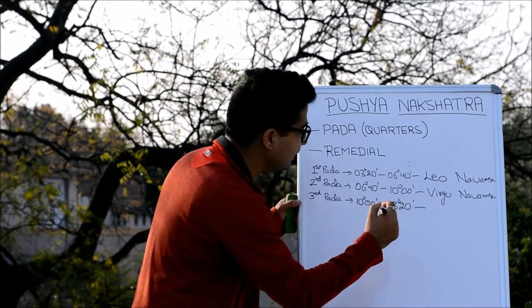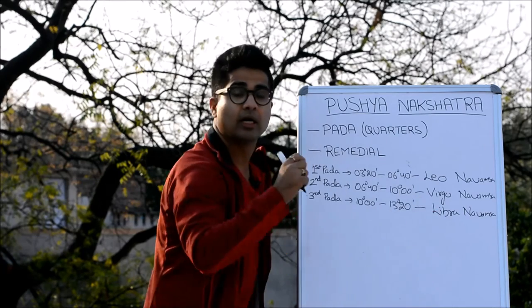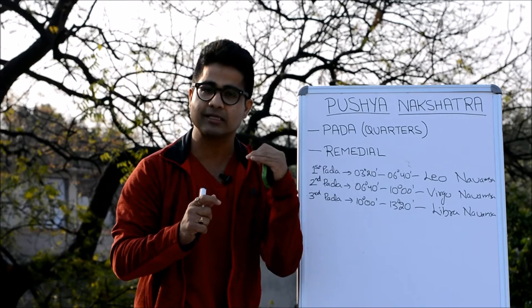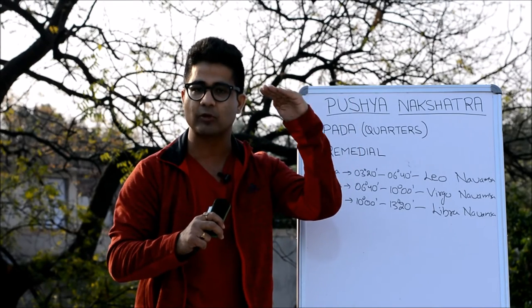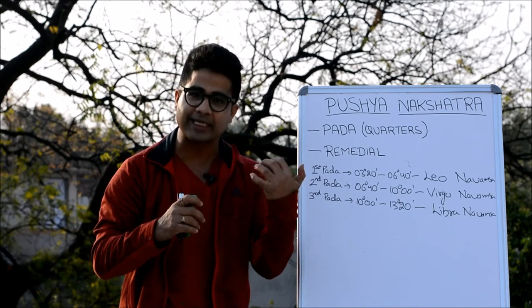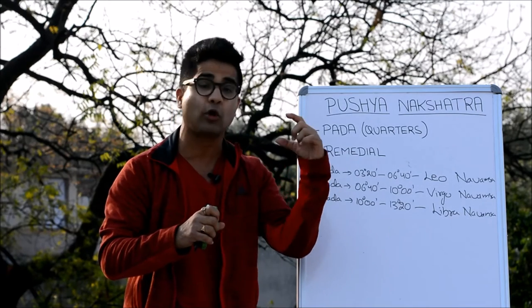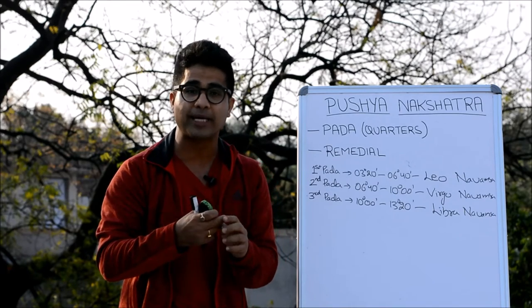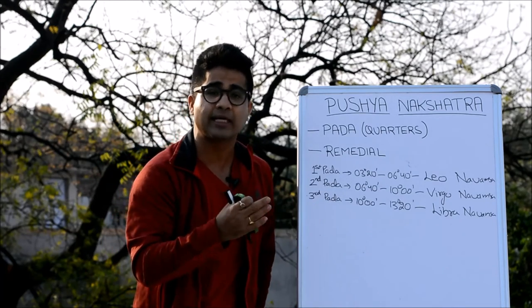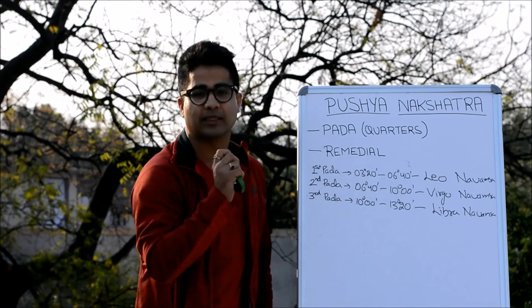The third pada spans 10 degrees to 13 degree 20 minutes, carrying the energy of Venus since Venus rules Libra. If at birth the Moon was transiting Cancer at 12 degrees, it was in Pushya's third pada. Here the mind will be more driven by relationships and home comfort, since Cancer represents the original fourth house — maternal care, mother, and peace of mind. These things take precedence: comforts, homely environment, and relationships. The flip side is that if a planet is afflicted in this pada, too much superficiality may arise.